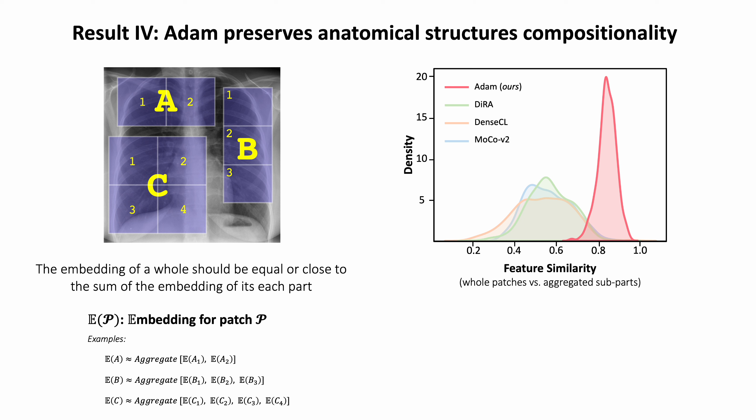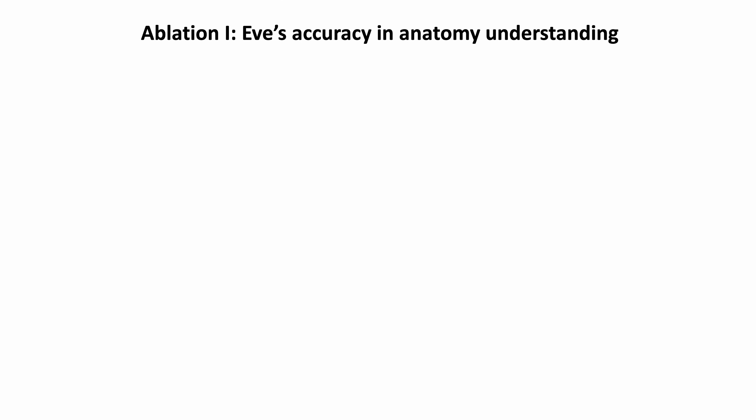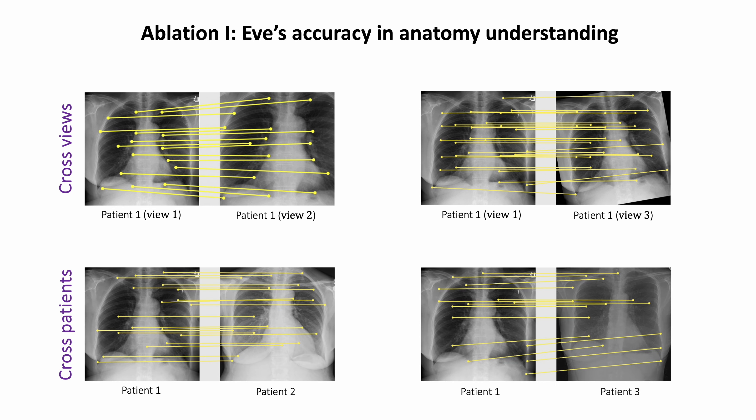As seen, ADAM's distribution is narrower and taller than the baseline, and its average is closer to one. We also evaluate EVE's accuracy in anatomy understanding by visualizing dense correspondence between an image and its augmented views and different patients. As seen, EVE maps semantically similar structures regardless of their differences, showing its potential for landmark detection and image registration applications.